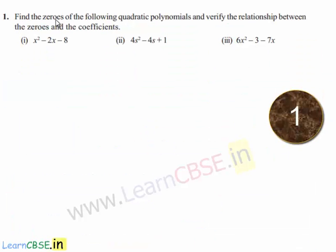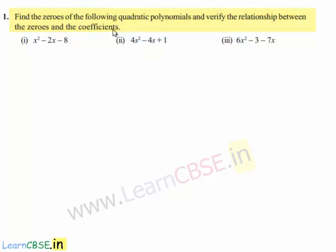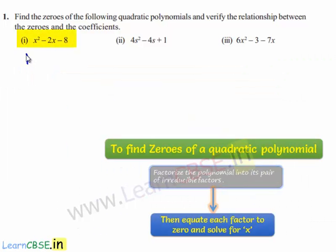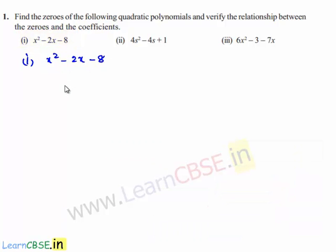Coming to the first problem: find the zeros of the following quadratic polynomials and verify the relationship between the zeros and the coefficients. The first polynomial given to us is x² minus 2x minus 8. In order to find the zeros, we need two integers such that their sum is equal to minus 2 and product is equal to minus 8.